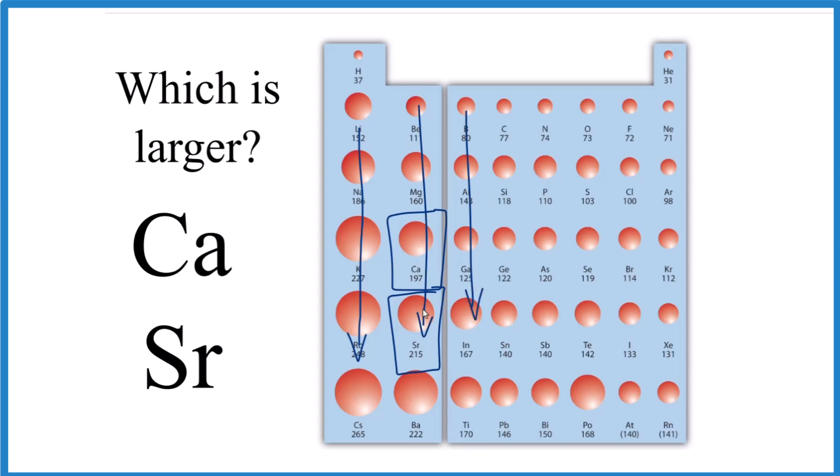So calcium, we go down to strontium, it should increase, and that means strontium has a larger atomic radius than calcium. So again, the trend: as we go down groups on the periodic table, the atomic radius increases. That's why strontium is larger than calcium. That's how we can tell, because it's lower in its group.